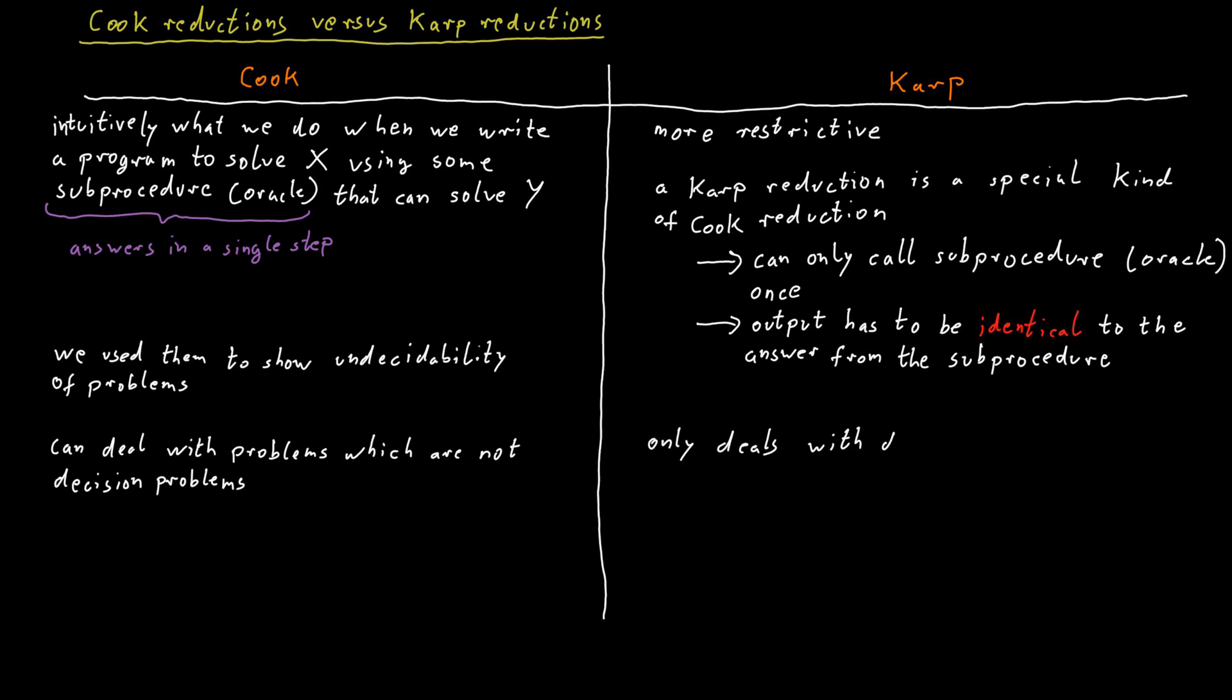Karp reductions on the other hand can only deal with decision problems. They're defined in such a way that it only makes sense if both of the problems, the problem you're reducing from and the problem you're reducing to, are decision problems, and they're more restrictive.